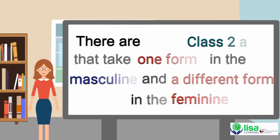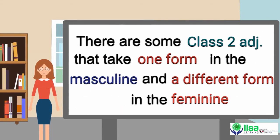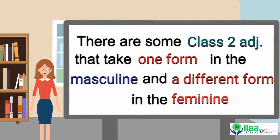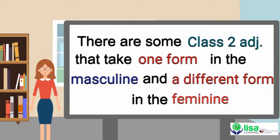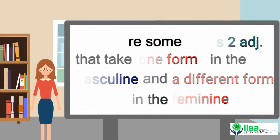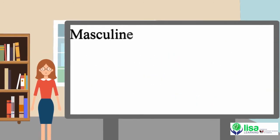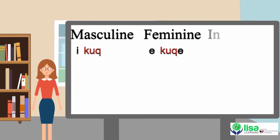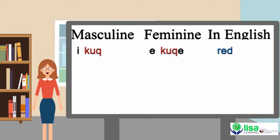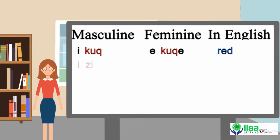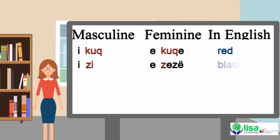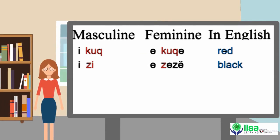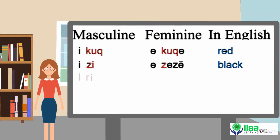There are some Class 2 adjectives that take one form in the masculine and a different form in the feminine. Example: masculine i kuq, feminine e kuqe — in English, red. Masculine i zi, feminine e zezë — in English, black.